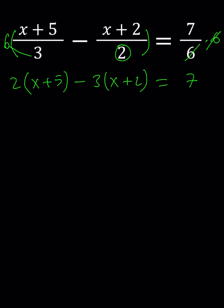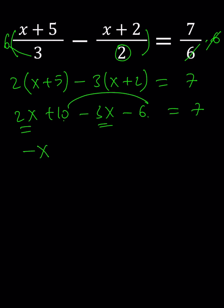Let's go ahead and use the distributive property, which gives us 2x plus 10 minus 3x minus 6 equals 7. First, we are going to combine like terms. 2x minus 3x is negative x. 10 minus 6 is equal to positive 4, so we're going to write it as plus 4, and that's equal to 7.